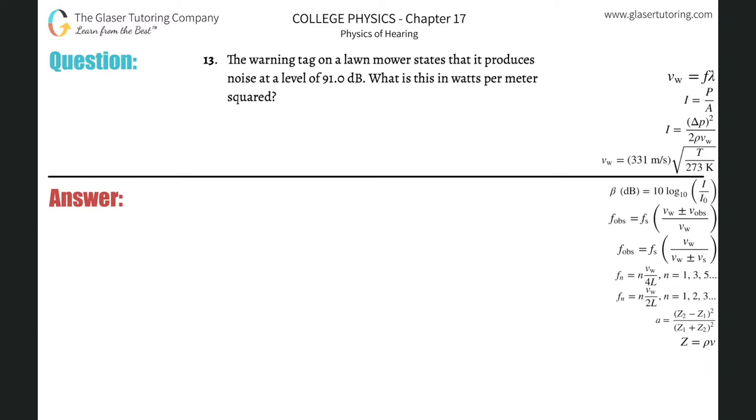Number 13: The warning tag on a lawnmower states that it produces noise at a level of 91 decibels. What is this in watts per meter squared? Watts per meter squared are the standard units of intensity, so we need a formula that relates decibels to intensity.